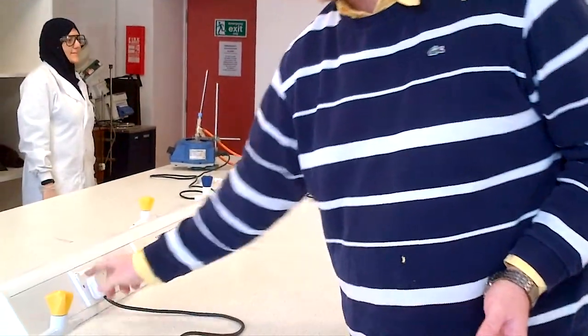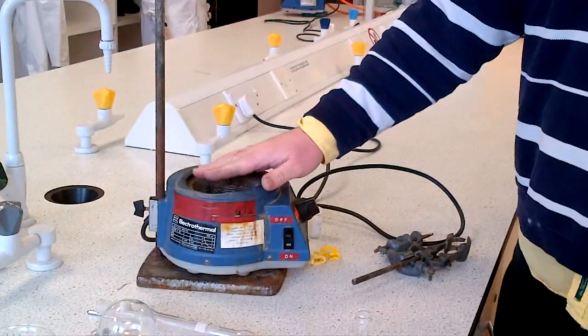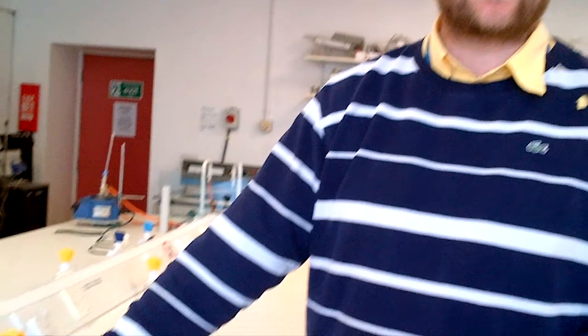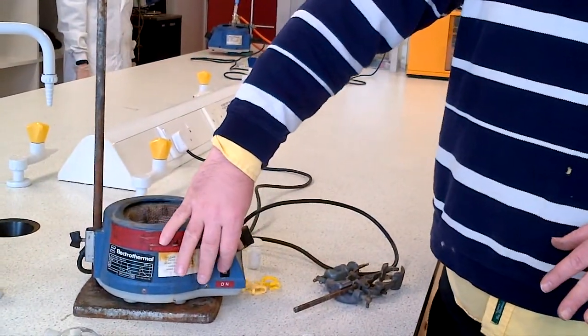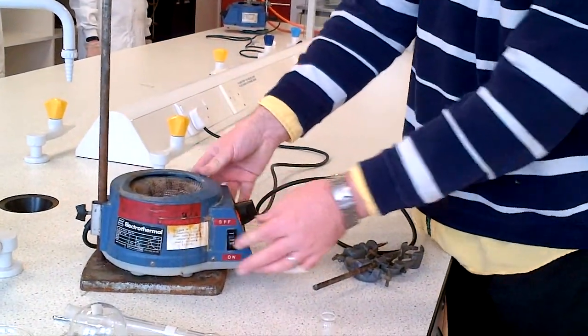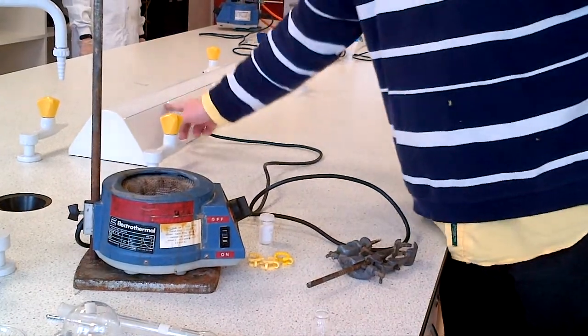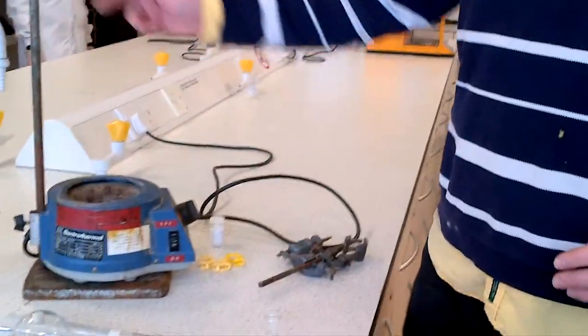But before you do anything, it's worthwhile to make sure the heating mantle is actually heated. You don't want to set everything up and waste valuable time by realizing the mantle isn't heated. Switch it on, put your hand over the trough to check it starts to heat. While you're assembling the kit, turn everything off so you don't burn yourself.